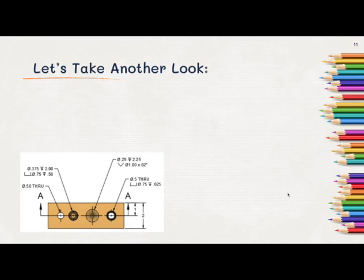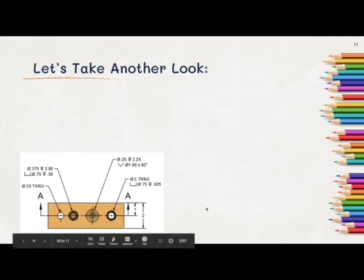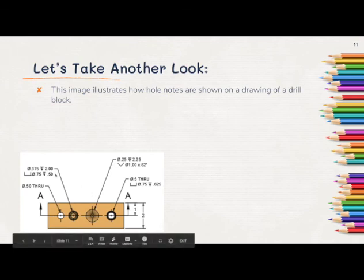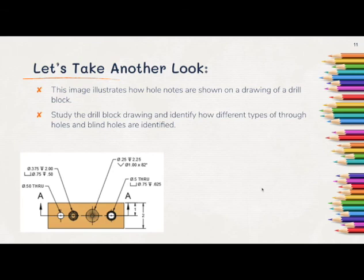So let's take another look. This is a picture of a drill block. It's a model you'll be creating later. The drill block has four different types of holes. So this image illustrates how hole notes are shown on a drawing of the drill block. You can see that they're illustrated with this arrow pointing to the hole that they represent. Study the drill block drawing and identify how different types of through holes and blind holes are identified. How many holes do you see and what types are there?